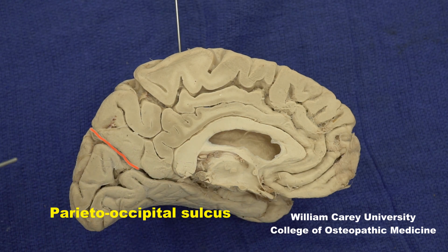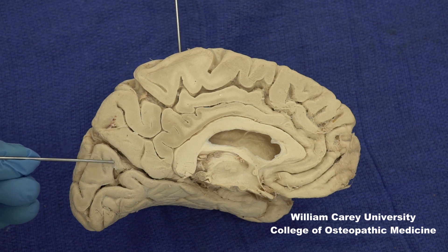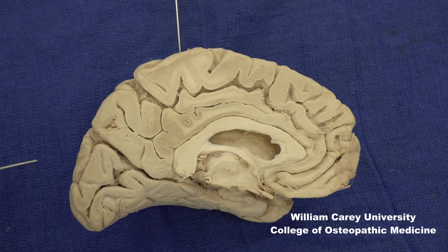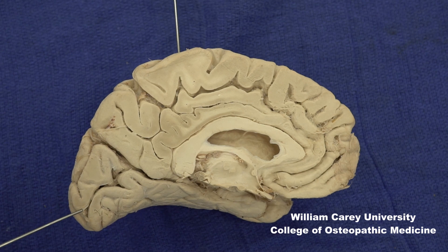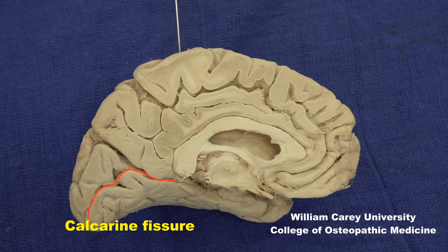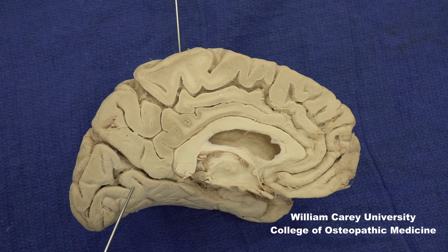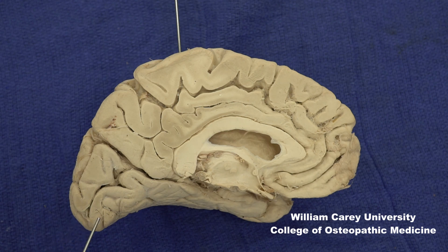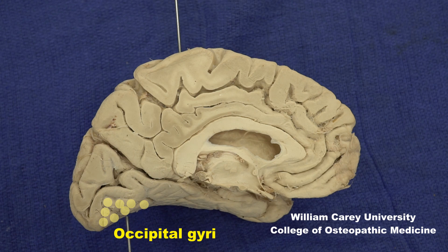As we enter the occipital lobe, we identify the cuneus — this wedge-shaped area formed between the parietal-occipital sulcus and the calcarine fissure of the occipital lobe. Just ventral to the calcarine fissure, this is the lingula or lingual gyrus of the occipital lobe. Posteriorly, we can also point to these occipital gyri that we have already seen from the ventral perspective.